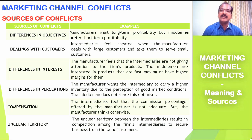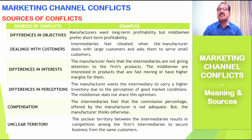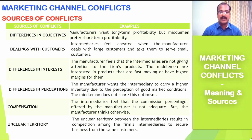The last source of conflict is unclear territory. Unclear territory between intermediaries results in competition among them — they step into each other's markets and try to sell products to customers belonging to another intermediary's territory. This is an important source of conflict among the channel intermediaries of a particular firm.